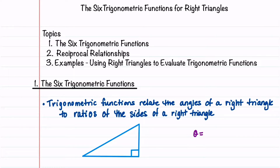Welcome to Understand the Math. In the video description, you'll find a link to guided notes that can be downloaded and filled in as you follow along with the video. In this video, I'm going to define what the six trigonometric functions are for a right triangle, define reciprocal relationships for these functions, and then work through some example problems where we find the trigonometric functions of a right triangle when all three side lengths or one of the trigonometric functions are given.